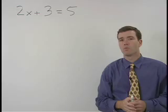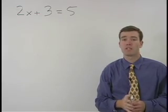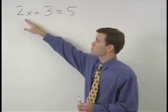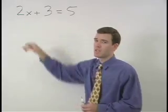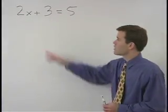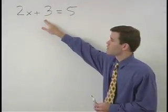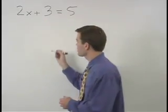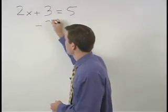Our first step will be to isolate the term containing x, which in this case is 2x. To isolate 2x we have to get rid of this plus 3 by subtracting 3 from both sides of the equation.